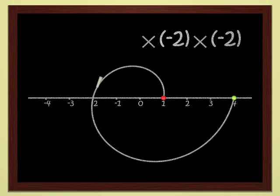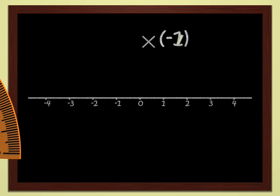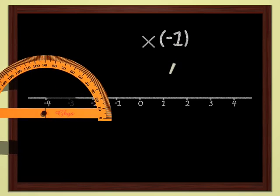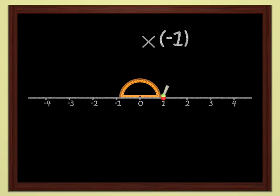If we multiply twice by minus two, we have multiplied by four. Multiplying by minus one is very easy. Each point is sent to the symmetrical point with respect to the origin. In other words, we do a half turn, a rotation by 180 degrees, if you like.